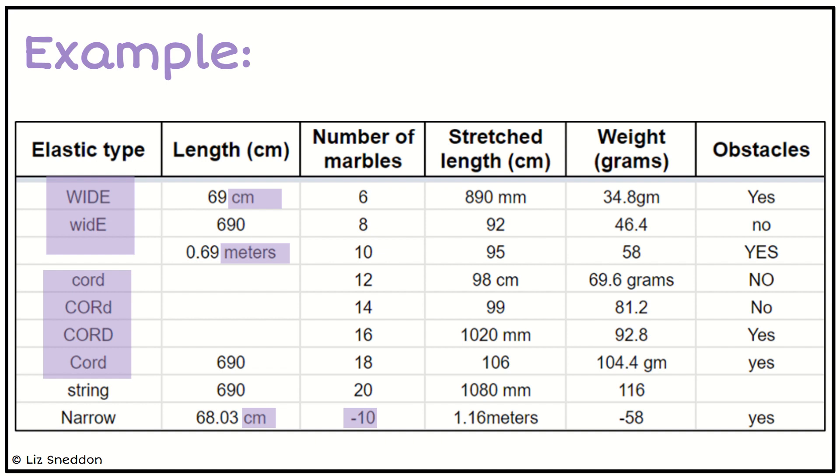Down in our number of marbles column, we've got a negative 10. In reality, it's not possible to have negative 10 marbles—you've either got one or you don't, but the lowest number you've got is zero. So that is clearly a mistake.